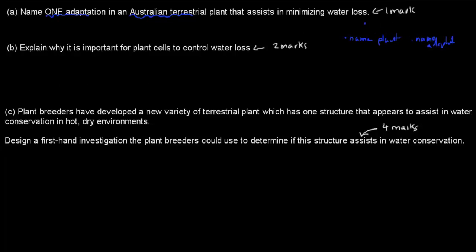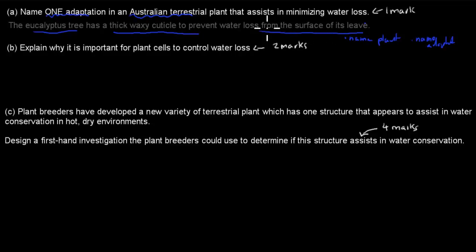So for question A, I just wrote the eucalyptus tree, as this is the actual Australian terrestrial plant, has a thick, waxy cuticle. That is the adaptation to prevent water loss from the surface of its leaves, and that's what it does. And that gets you a quick mark for this one.